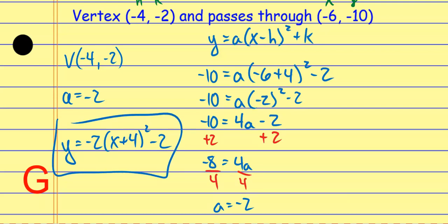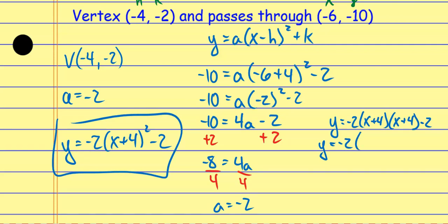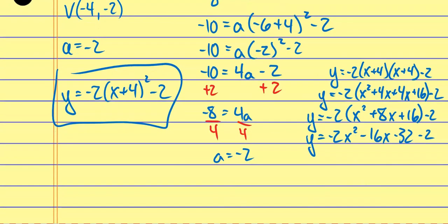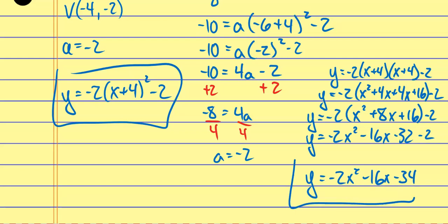If I want this in standard form, I multiply out x plus 4 times x plus 4: that's x squared plus 4x plus 4x plus 16, combining like terms to x squared plus 8x plus 16. I distribute the negative 2 and continue combining like terms to get the standard form equation. So again: start with vertex form, find the vertex, find the a value, write it in vertex form, then go to standard form from there.